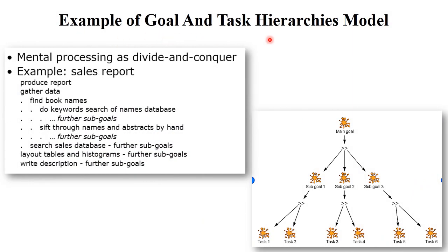Now, the example of the Goal and Task Hierarchical Model. This model generally uses a divide-and-conquer approach. For example, consider a sales report — you need to produce a particular report according to books. The first step is to gather data, then find the book's name by searching using keywords in the database. Then find the abstracts and names of the authors of that particular book. So, there is a main goal, sub-goals, and tasks. You should divide a particular task into sub-goals and particular actions, and by completing all sub-goals and tasks, you achieve your main goal.